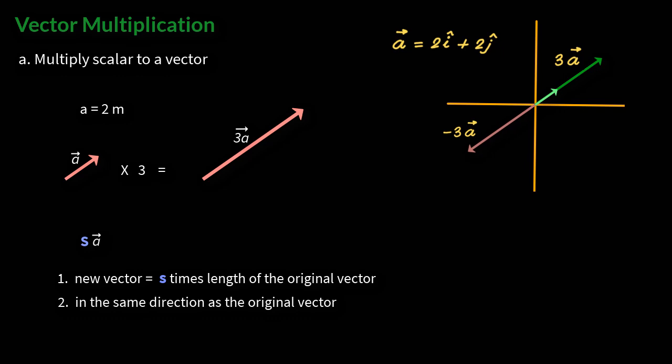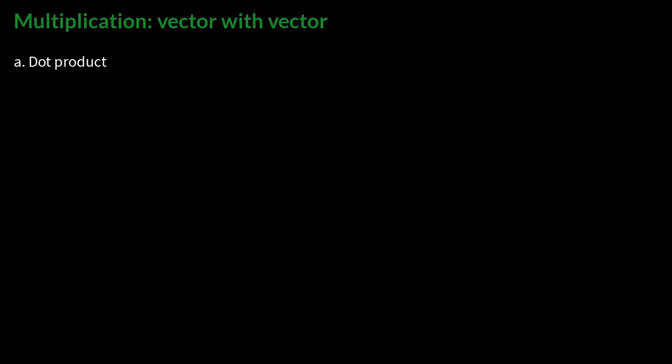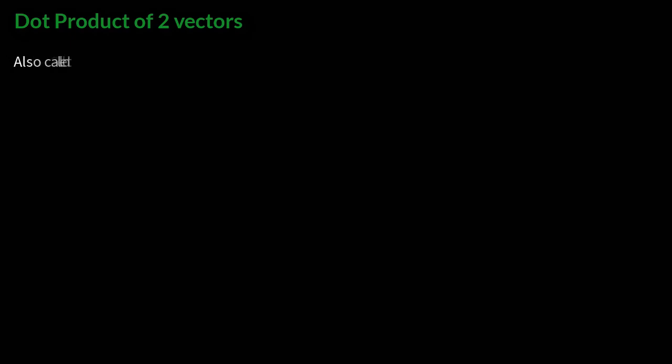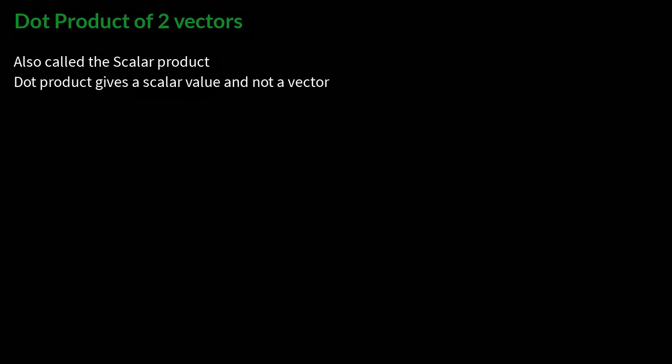So that was the simple part. Now let us get on with multiplication where a vector is multiplied by another vector. In this, you have two types of multiplications: one is called the dot product of two vectors, and the other is called the cross product of two vectors. In this lesson, we'll understand the dot product. The dot product is also called the scalar product, because the product yields a scalar value and not a vector — when you multiply two vectors to get the dot product, you get a number as the answer, not a vector.